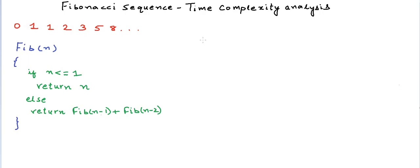Let's say the time taken to calculate Fib(n) is T(n). When we try to analyze time complexity of programs, we make an assumption that each simple operation takes one unit of time. So if we call this method Fib(n) for n greater than 1, then first we perform a comparison with 1, which is one unit of cost.